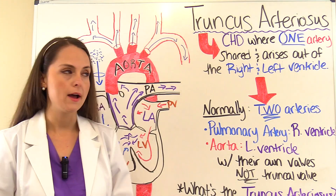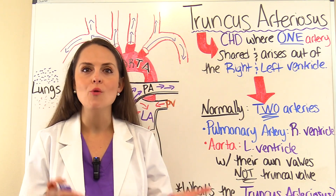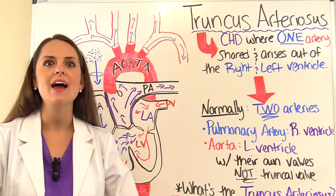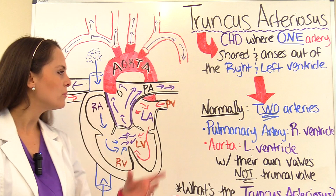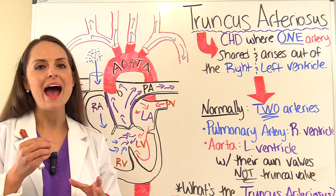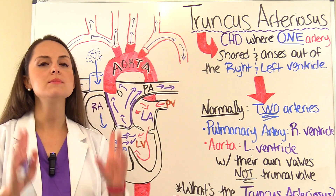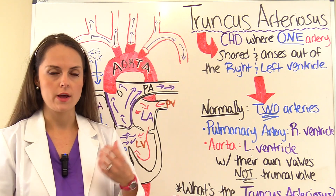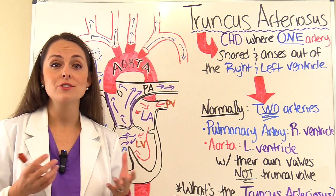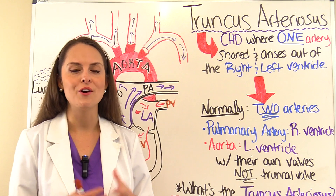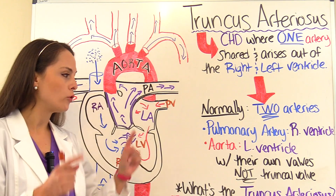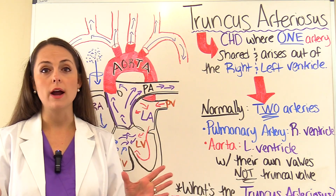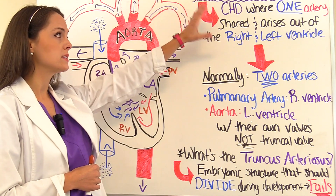These two arteries each have their own valves — the pulmonary artery has the pulmonic valve and the aorta has the aortic valve. Those valves open and close as the ventricles pump blood through the body. However, in truncus arteriosus those valves are not present. There is usually only one valve in the shared artery, known as the truncal valve, and it's not the greatest valve.